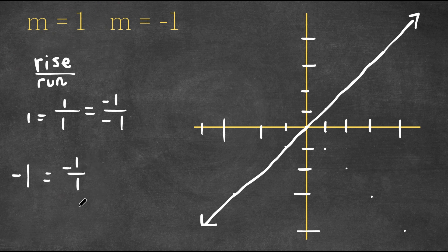However, this could also be one over negative one, meaning we could have the rise be positive and the run be negative. So we could go up by one and to the left by one, repeating this pattern.